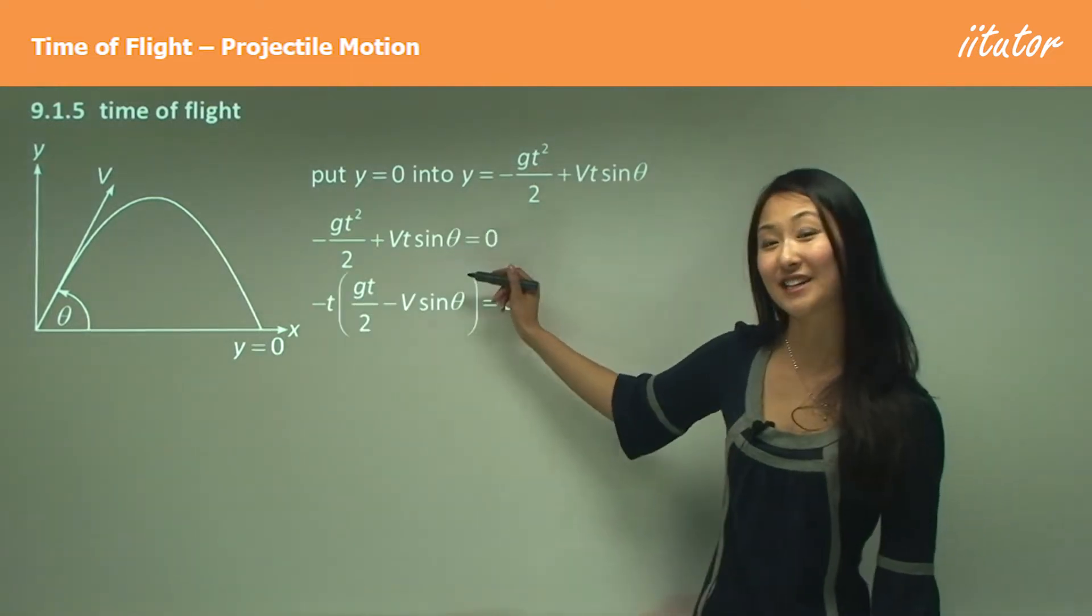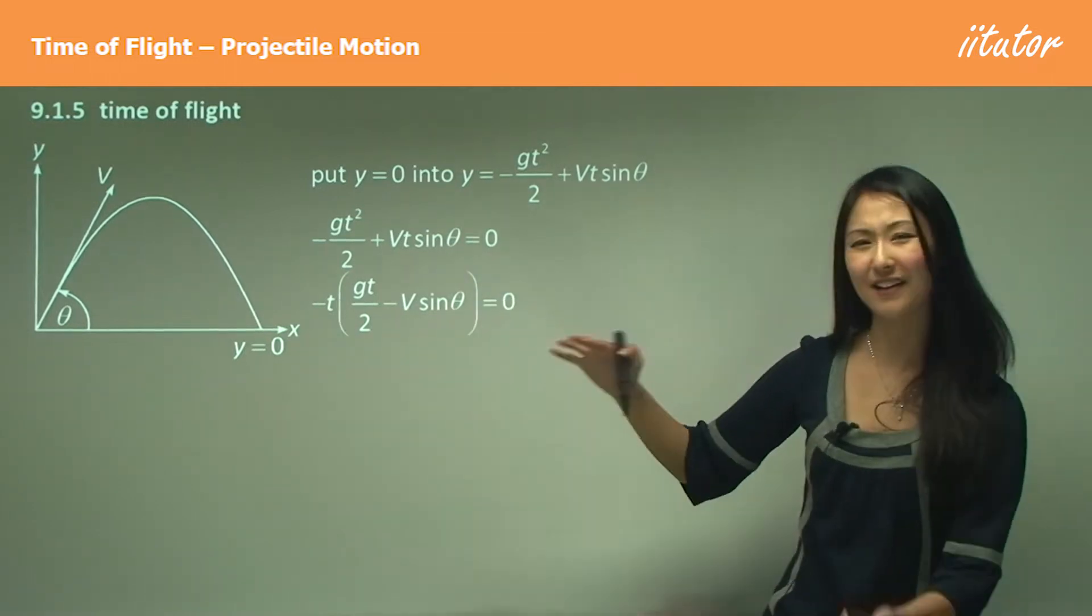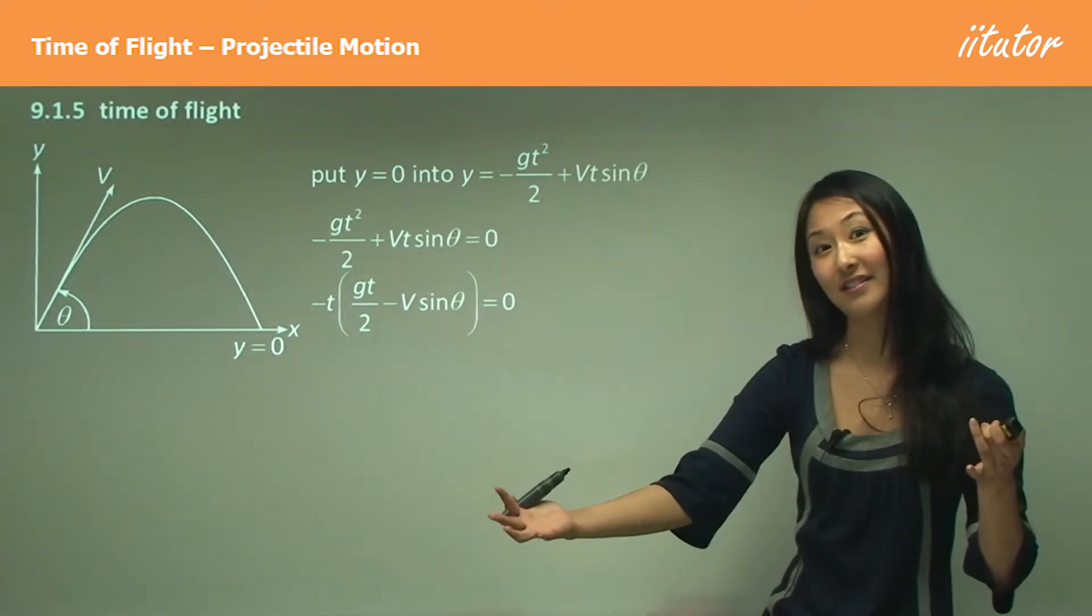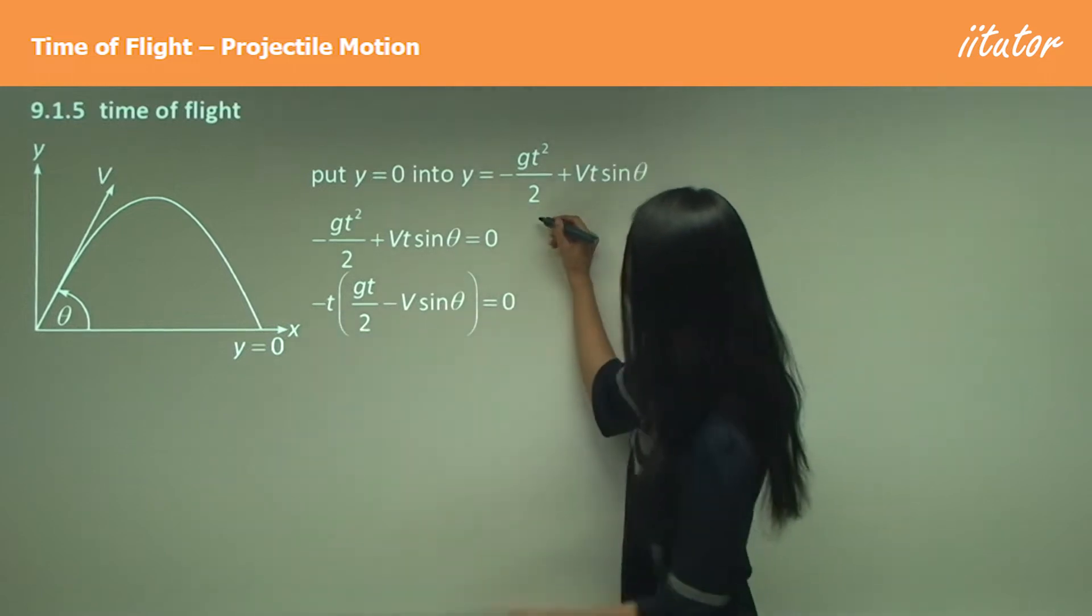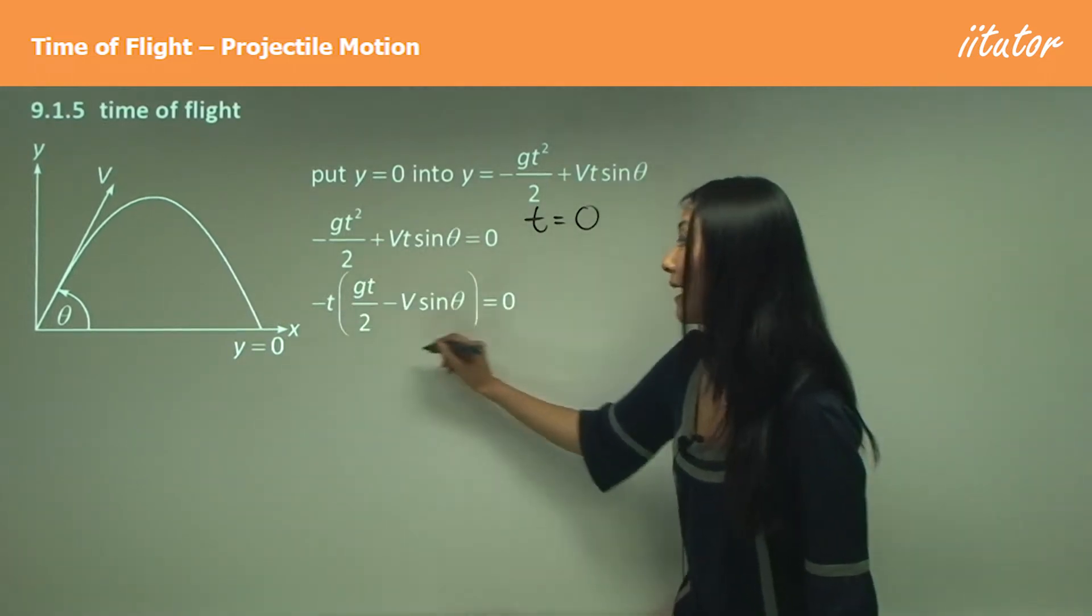From here we can factorize out the t, and once we factorize out the t, it's kind of like in a quadratic equation where you say that equals zero or the other thing equals zero. So in this case, either that t there equals zero, or this big bracket equals zero.